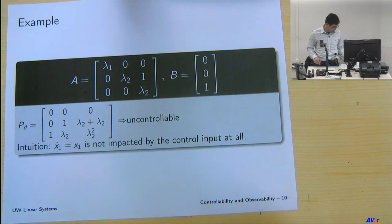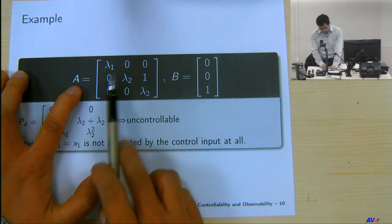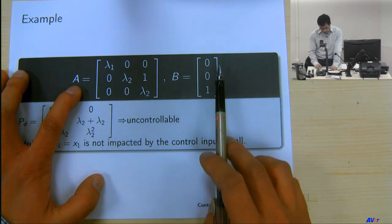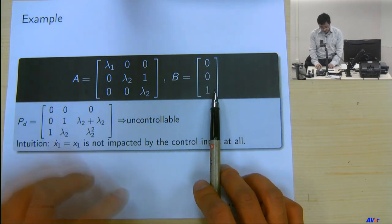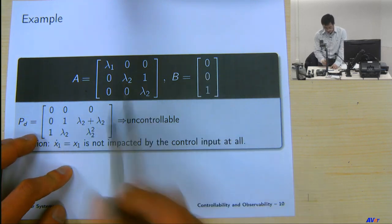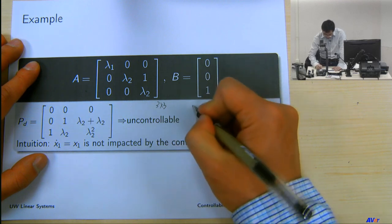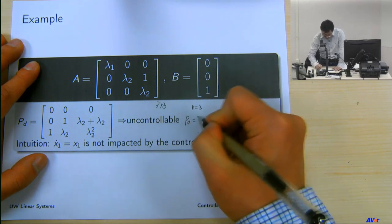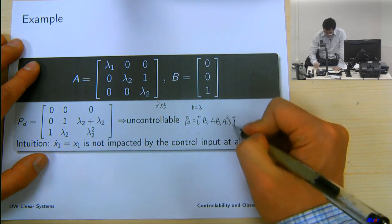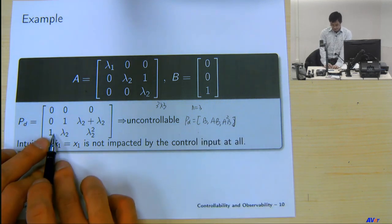Now let's connect controllable canonical form with controllability. The controllable canonical form has B equal to [0, 0, 1]^T and A with all coefficients in the last row. If you check the controllability matrix for this form, computing B, AB, A²B: B is [0,0,1]^T, AB picks up the last column of A, and A²B adds the second column plus a scaled version of the last column. You can verify that all three rows of the resulting P_D matrix are linearly independent from each other.